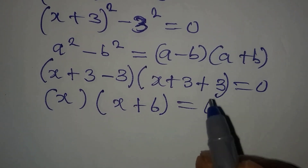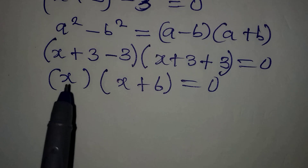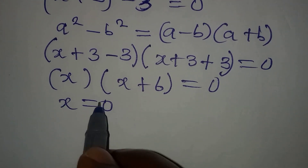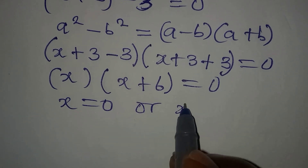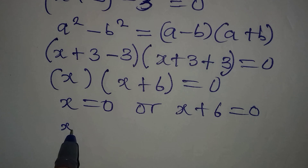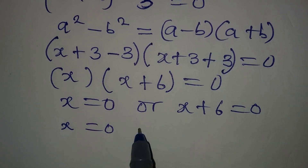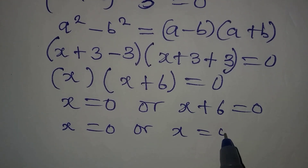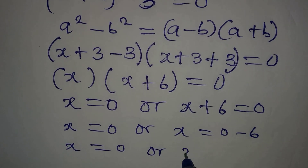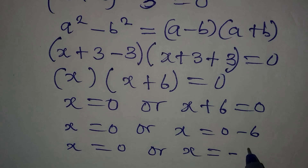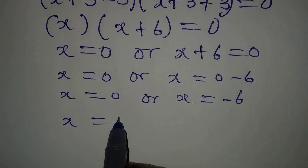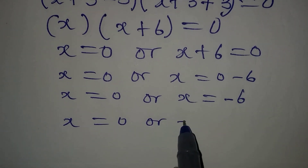This equals 0. We can apply the zero product rule — no need to open the brackets. So x = 0, or x + 6 = 0. Then x = 0, or x = 0 − 6 = −6. Bringing the solutions together: x = 0 or x = −6.